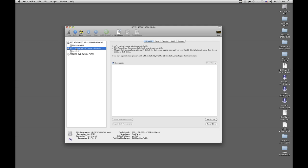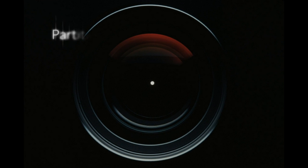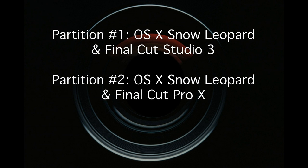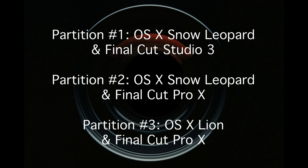What we're going to do is create three new partitions on this hard drive. Partition one is going to be a bootable clone of my current Mac system drive running Final Cut Studio 3 under Snow Leopard. Partition two is going to boot to a fresh install of Snow Leopard in preparation for Final Cut Pro 10 from the Apple App Store. Finally, I'll leave partition three empty for now, but I'll eventually download and install OSX Lion on July 9th and then install Final Cut Pro 10 on that partition as well. When that's done, I'll be able to run any combination of Final Cut Pro with any version of OSX with just a simple reboot.